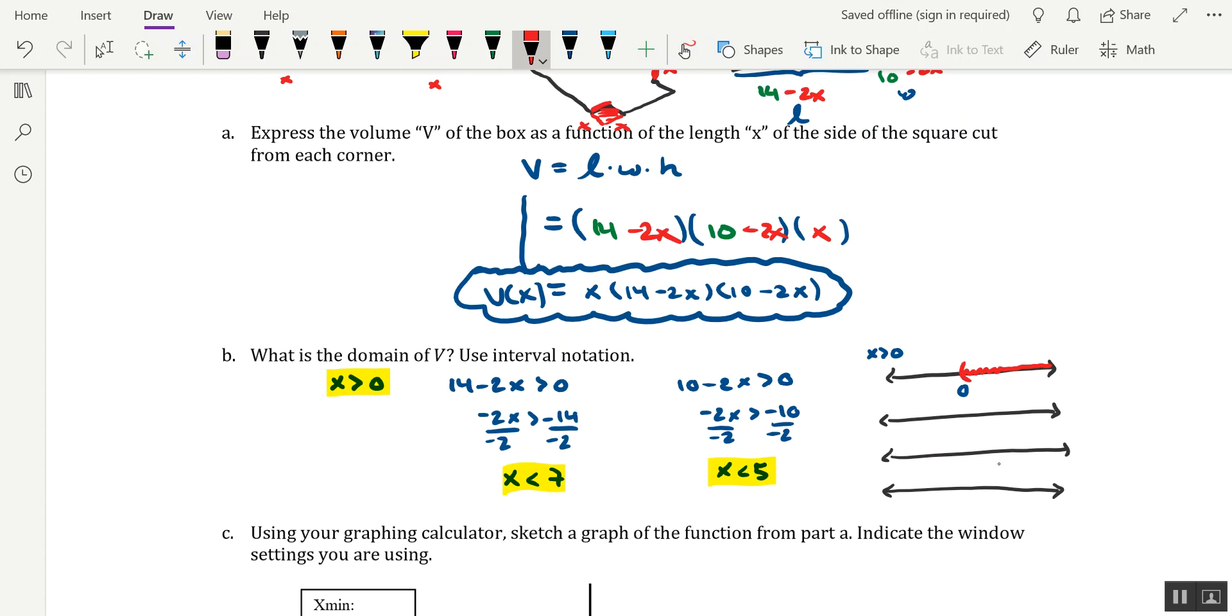For the next number line, we could do x is less than 7. So I'm going to go a little further to the right on this number line, put a tick mark for 7. And we want x to be less than 7, so we're going to shade to the left of this all the way down to negative infinity. Parenthesis on the 7.